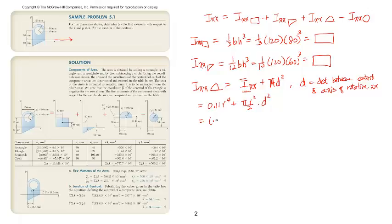My radius is 60. Actually, 40 millimeters, right? No, sorry, 60. I'm looking at the semi-circle. Plus π times 60². And the distance d.